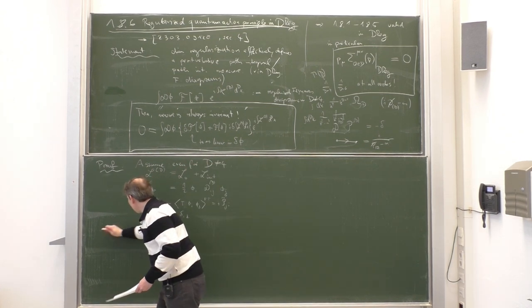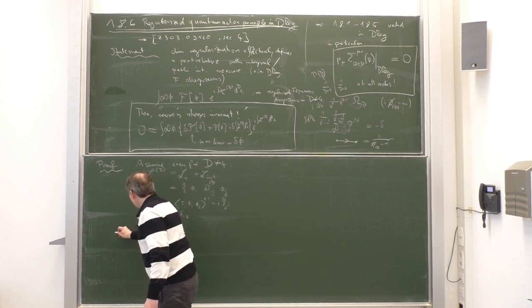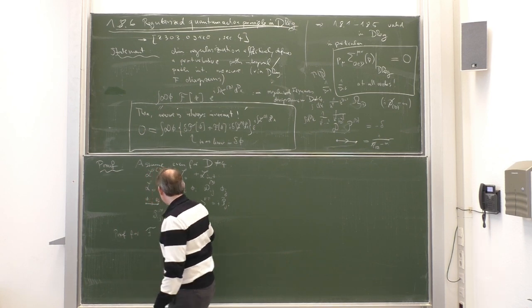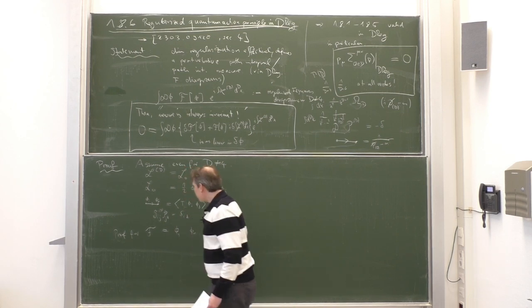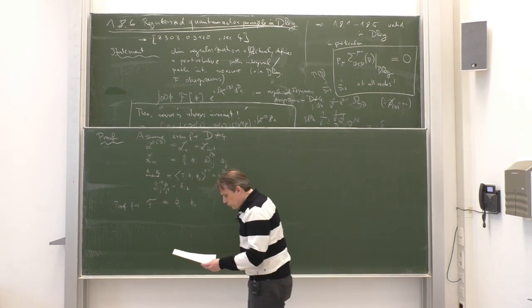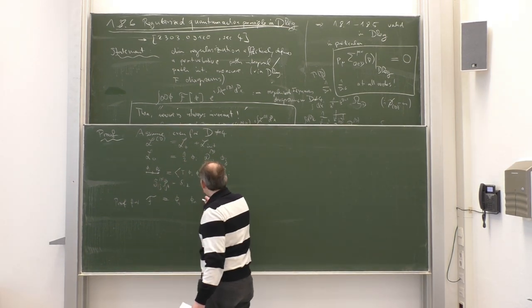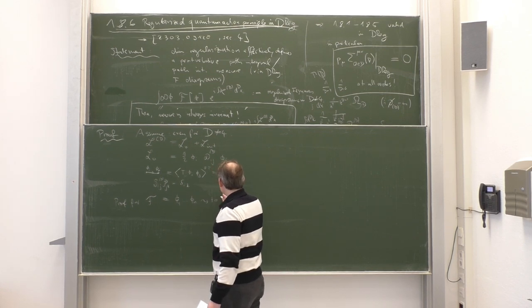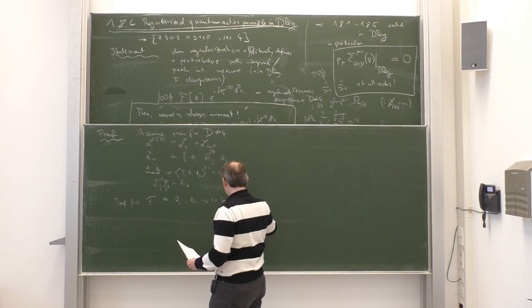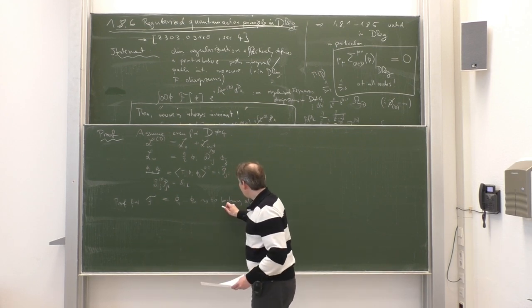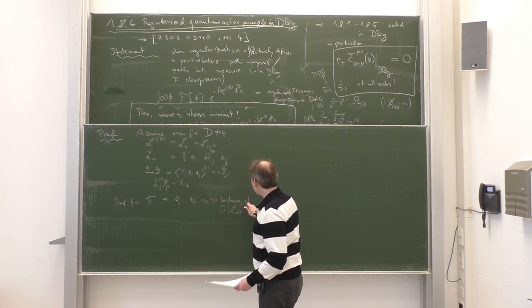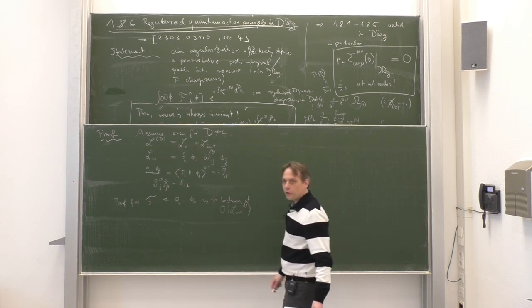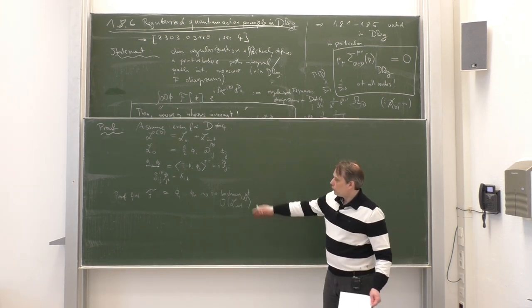Let us prove it for a special case: the functional f is just a product of elementary operators phi_1 up to phi_n. That is really the only thing that is relevant. What is to be shown is the following, at all orders — let us show it at one specific order, namely at the order of the interaction Lagrangian to the power capital N, where N is an arbitrary number.